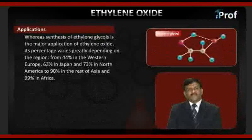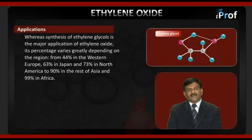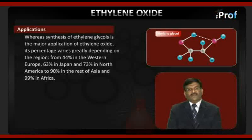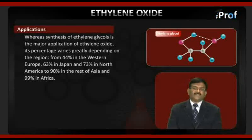Whereas the synthesis of ethylene glycol is the major application of ethylene oxide, its percentage varies greatly depending on the region: from 44% in Western Europe, 63% in Japan, and 73% in North America, to 90% in the rest of Asia, and 99% in Africa.